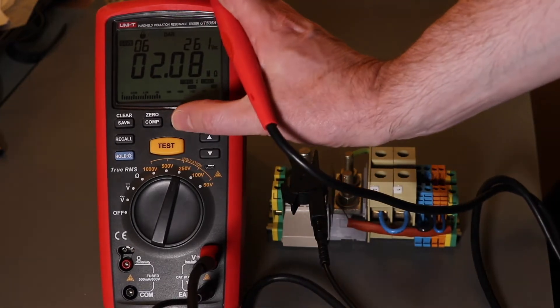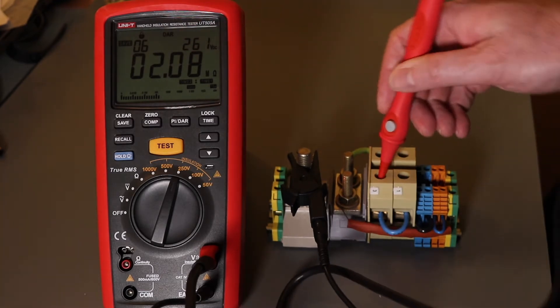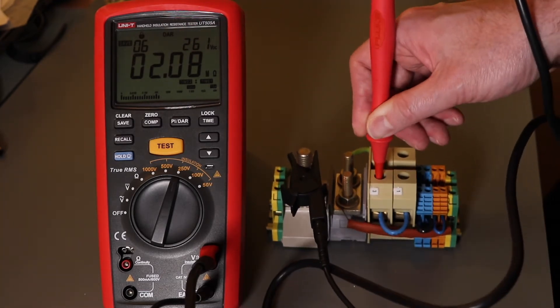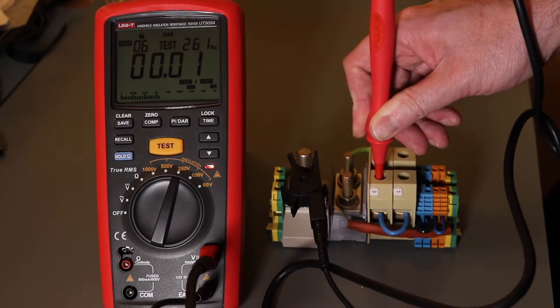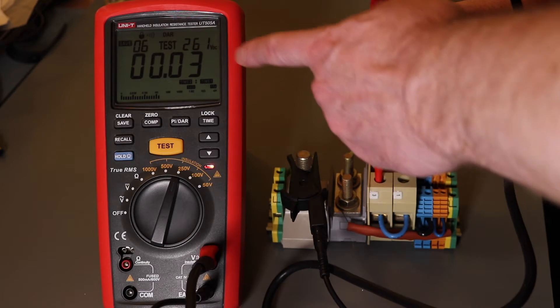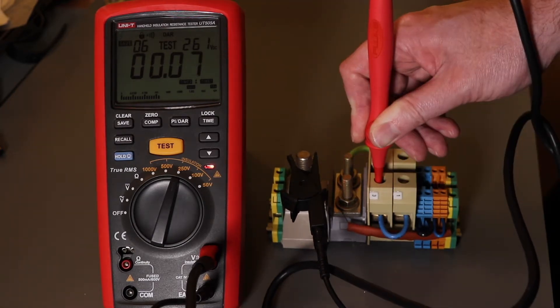If you go to the PI or a DAR function the display changes. So if I go for the test now, you can see now you've actually gone down to a timer on the display. And you don't get the actual insulation reading value.